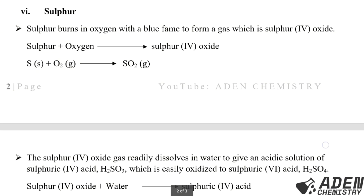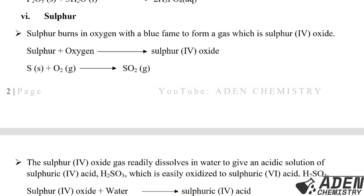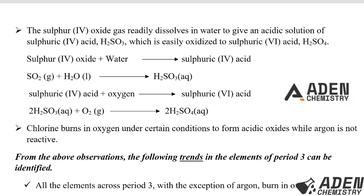Sulfur burns in oxygen with a pale blue flame to form a gas which is sulfur(IV) oxide (SO₂). The word equation: sulfur plus oxygen gives sulfur(IV) oxide. The balanced chemical equation: one mole of sulfur solid reacts with one mole of oxygen gas giving one mole of sulfur(IV) oxide gas.